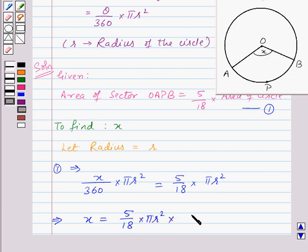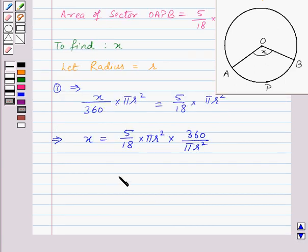This equals 100. So the value of x is 100 degrees. Thus, x = 100° is the required answer.